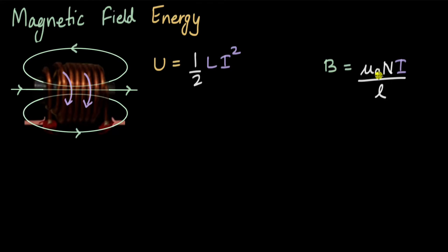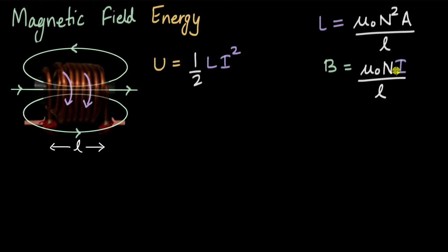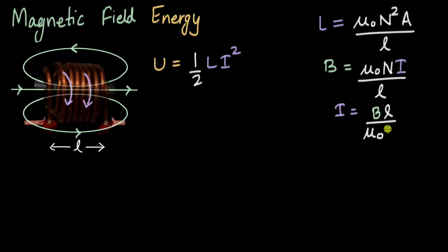The magnetic field due to a solenoid is given by B = μ₀nI/L, where L is the length of the solenoid. We can write I in terms of B and substitute it in. So, rearranging: I = B·L / (μ₀·n).